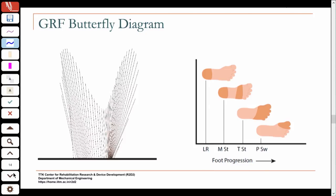This is known as the ground reaction force butterfly diagram. Typically, GRF data is obtained at 10-millisecond intervals on the force plate. It shows the normalized magnitude — divided by body weight — and the direction of the net ground reaction force at each interval. Because of the shape it looks like a butterfly wing, so it is called the butterfly diagram.